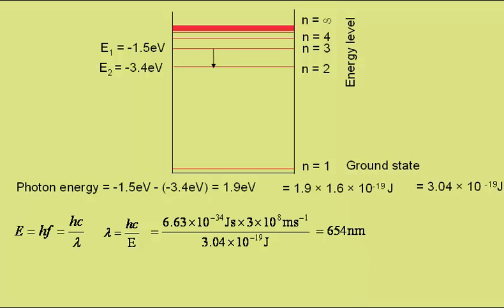Previously we showed the line to be 656 nanometers. The difference is just down to rounding errors in the numbers we've used.